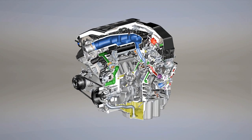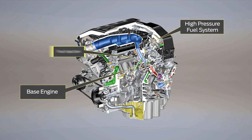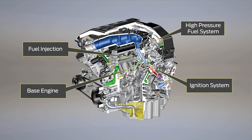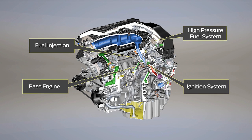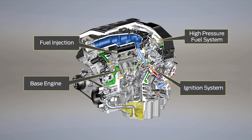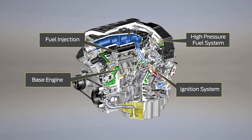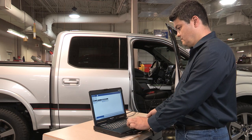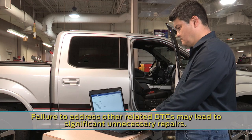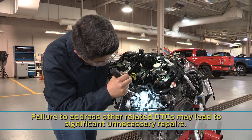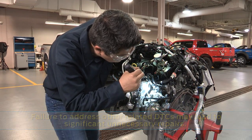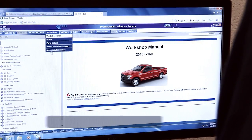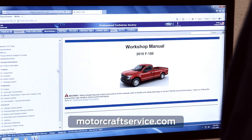There are multiple systems that can cause poor turbocharger performance or an underboost condition. A P0299 turbocharger underboost diagnostic trouble code or DTC can set because of a fault with these other systems. Correct any other system faults or DTCs that are present before diagnosing a turbocharger performance related concern. Follow the procedures in the workshop manual or on MotorCraftService.com as needed.